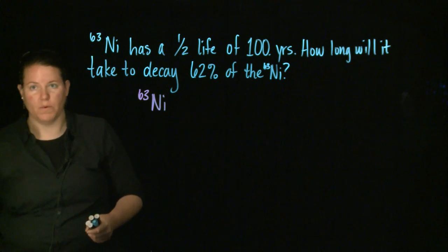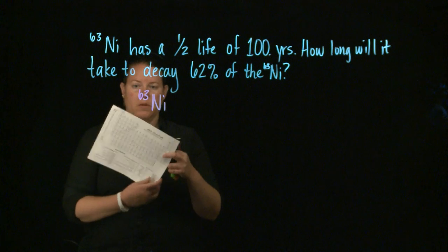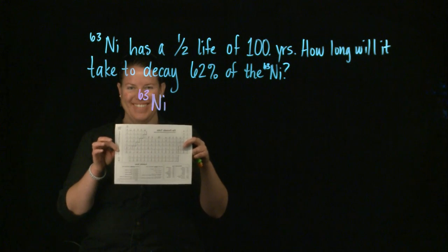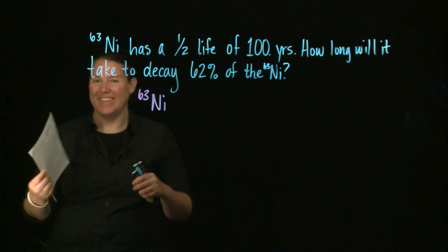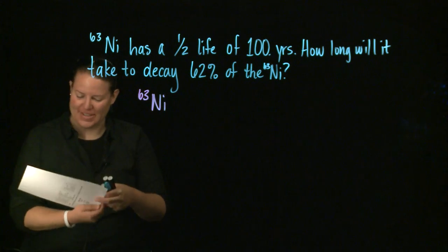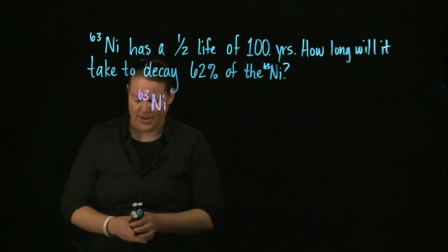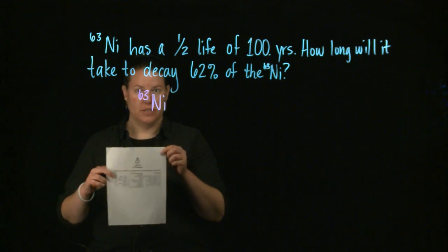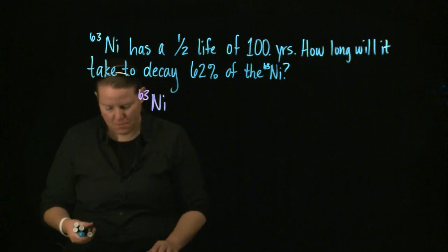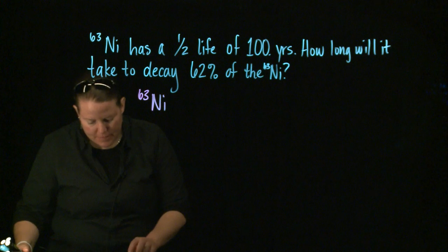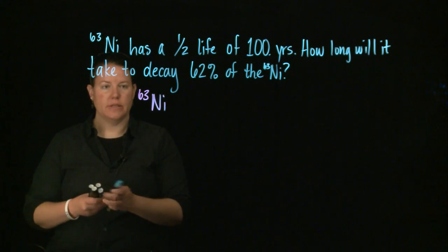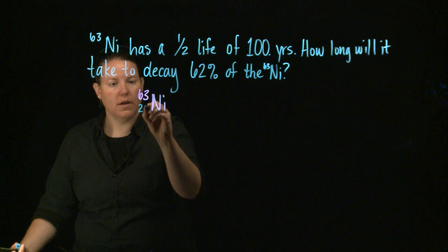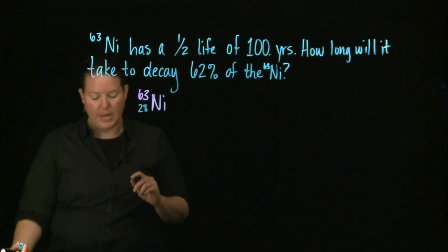So what we need to do is pull out our awesome periodic table. I love periodic tables — I hardly ever have one around unless it's part of an exam. This one has constants on the opposite side of it. Look at nickel — nickel has an atomic number of 28.